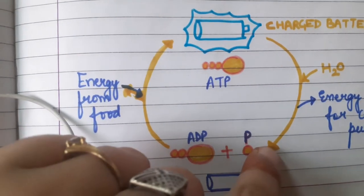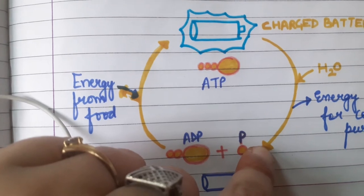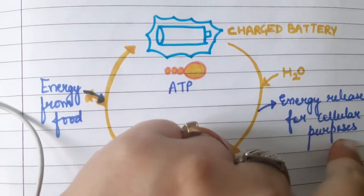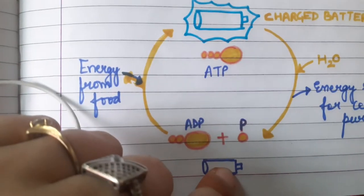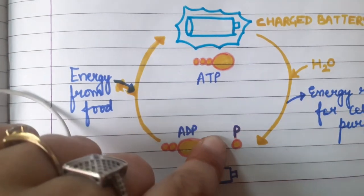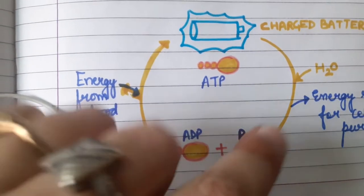To ADP, plus one phosphate is removed in the free form, and the energy is released which is used for various cellular purposes. Now the battery is dead. Then, whenever we eat food, we get nourishment from it.